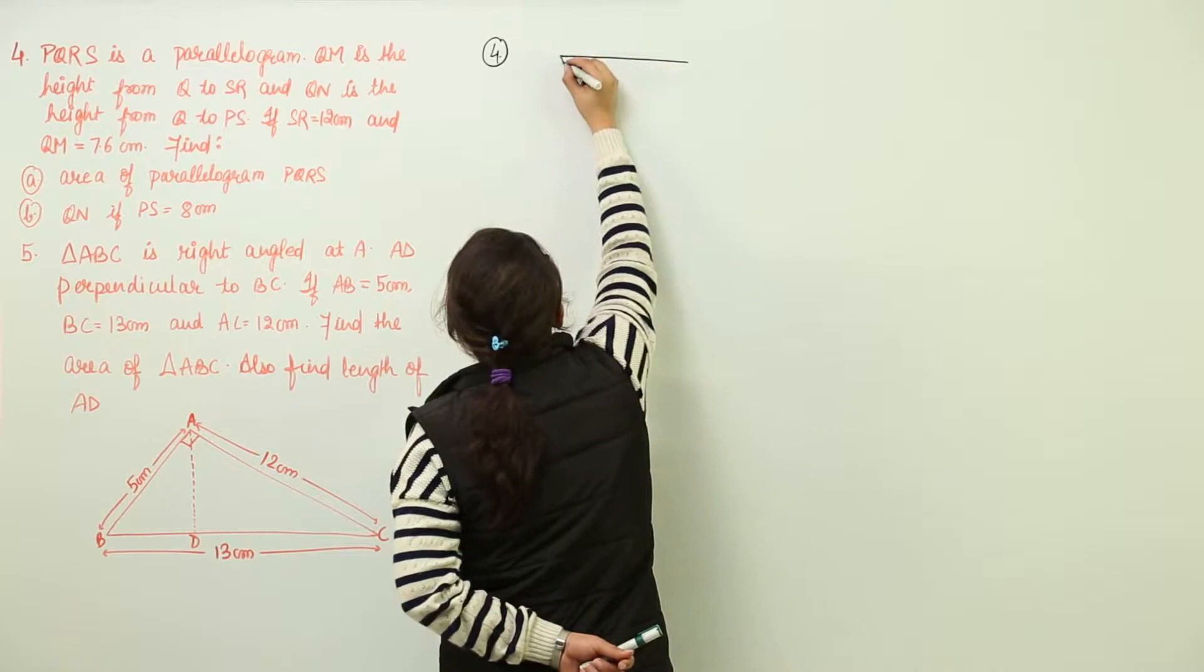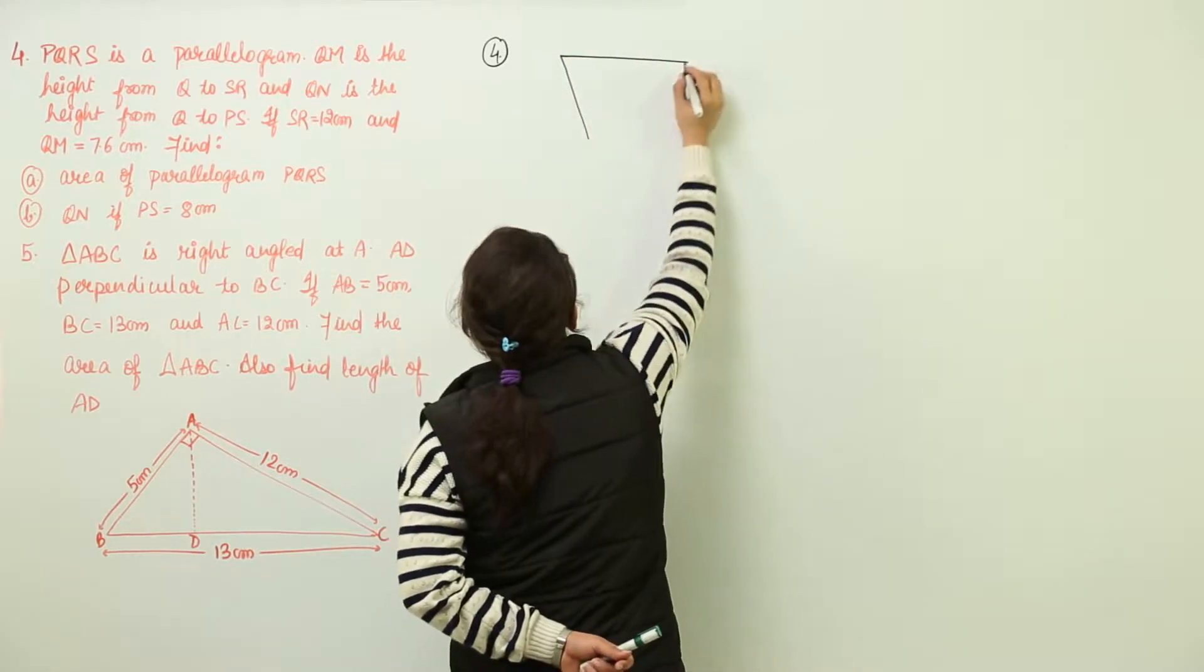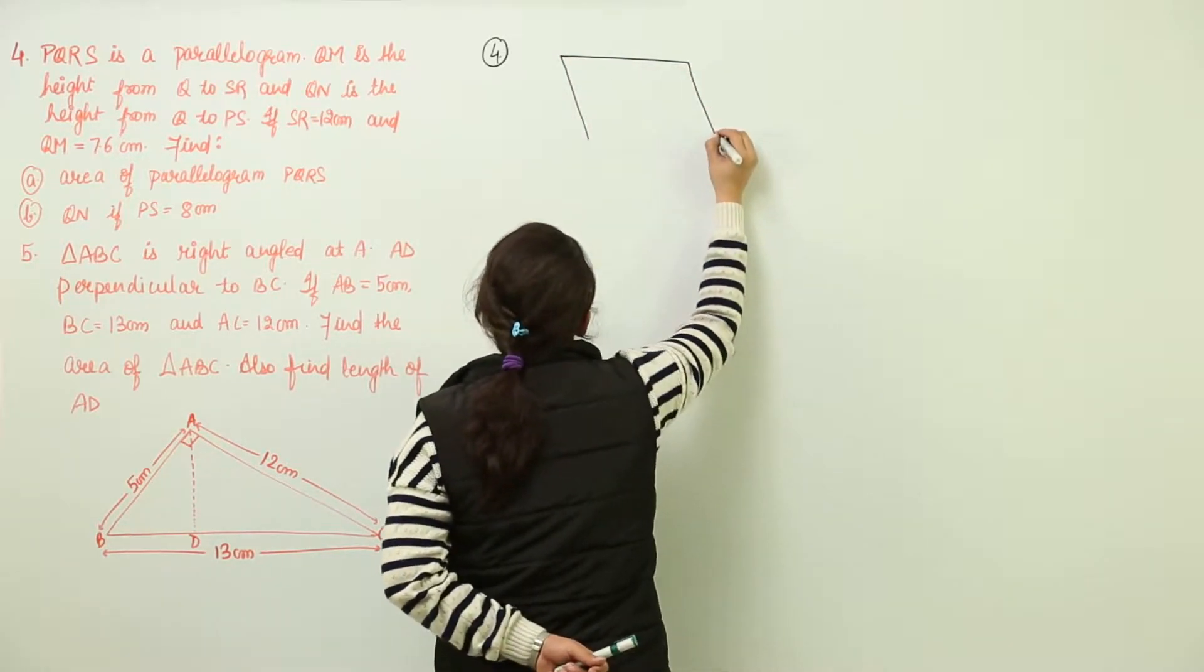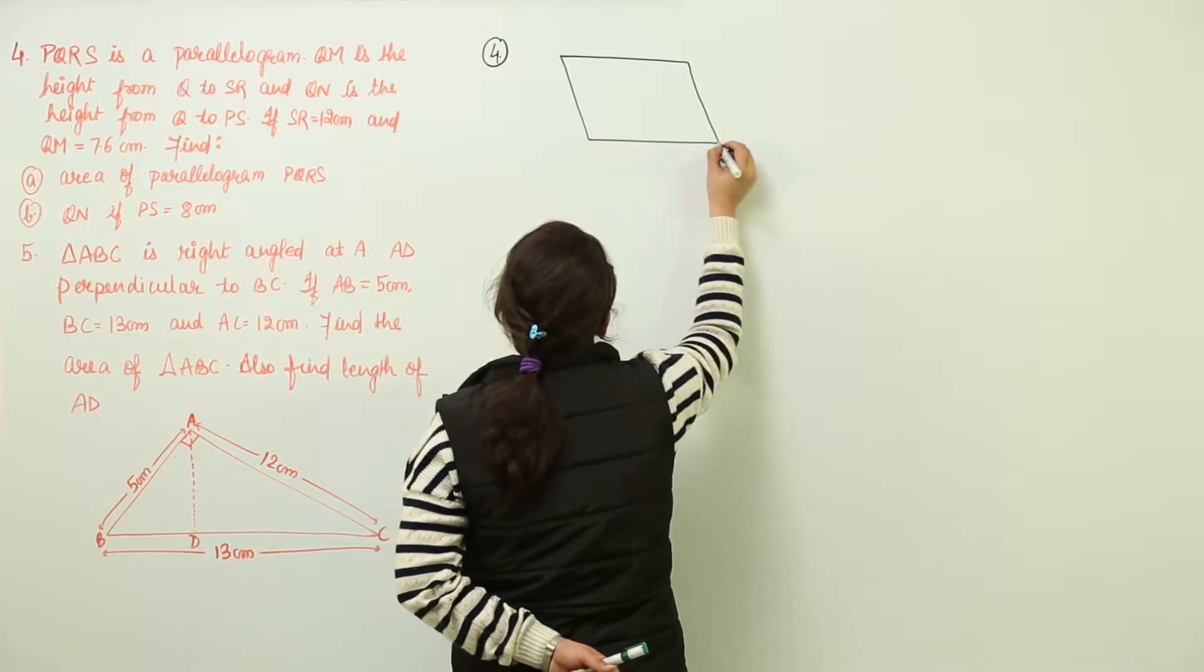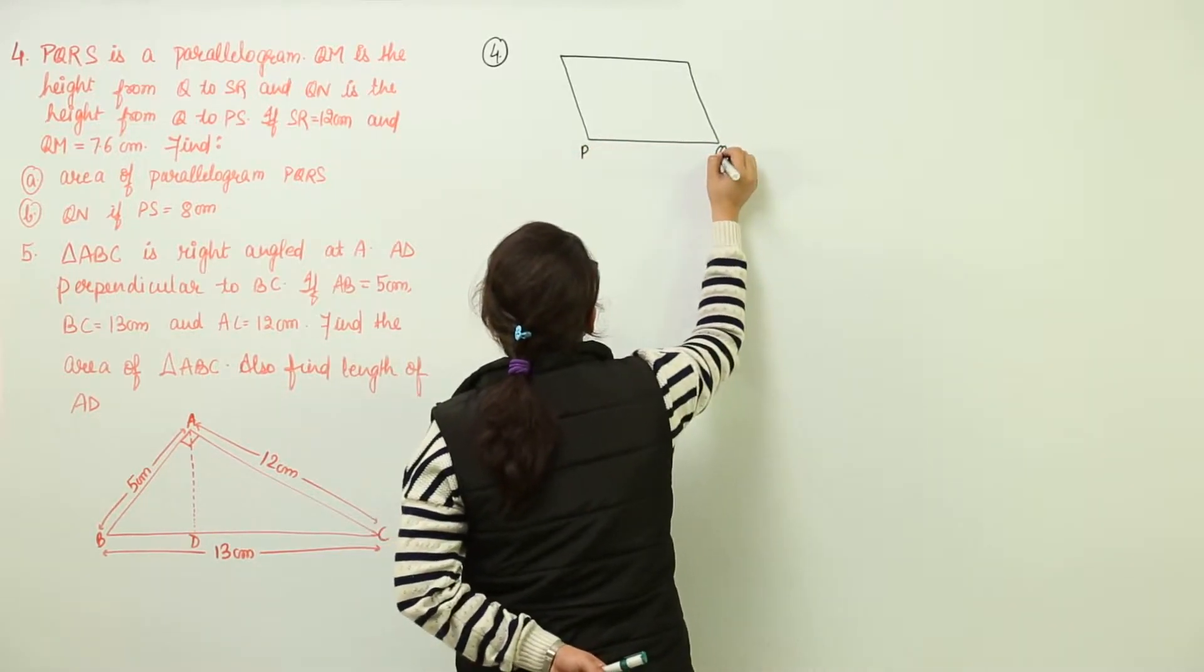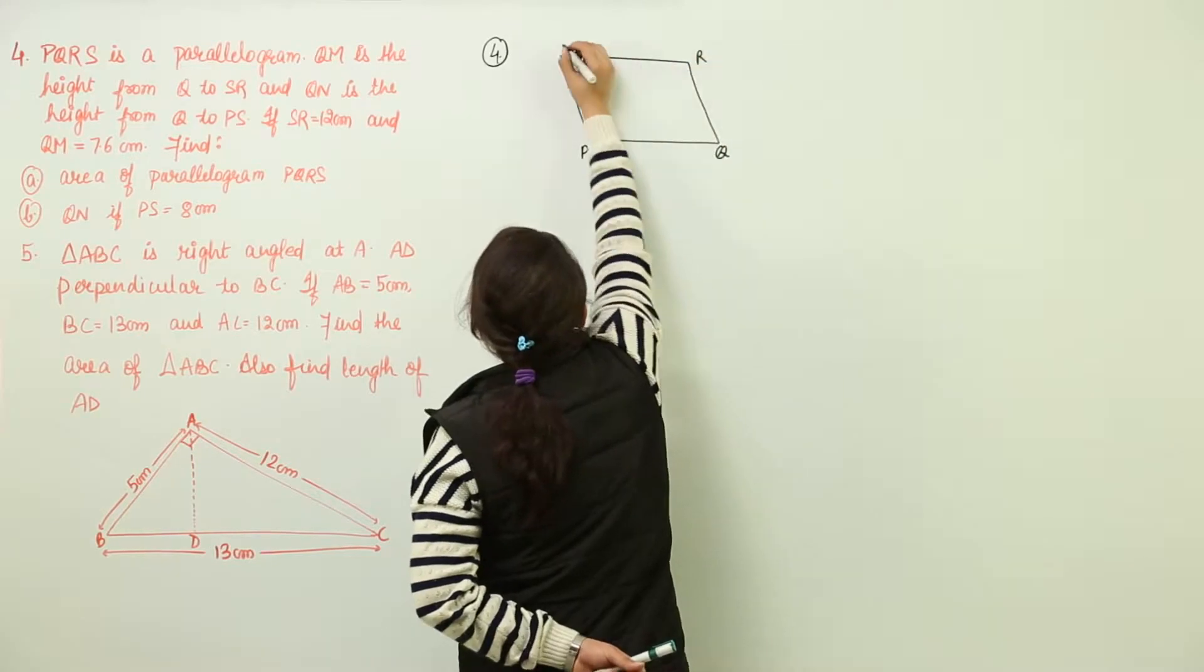That will be like this. PQRS and I have made the parallelogram. Let's name it P, Q, R, and S.